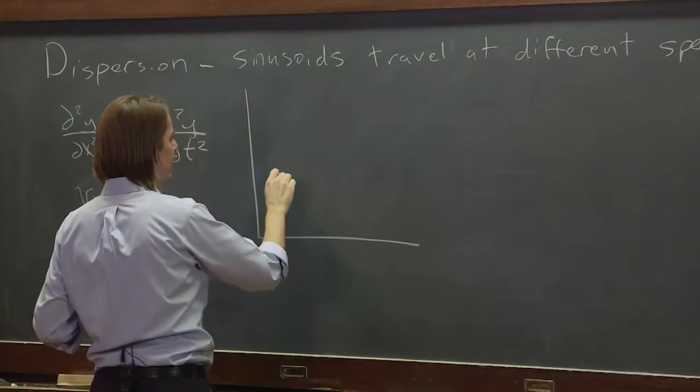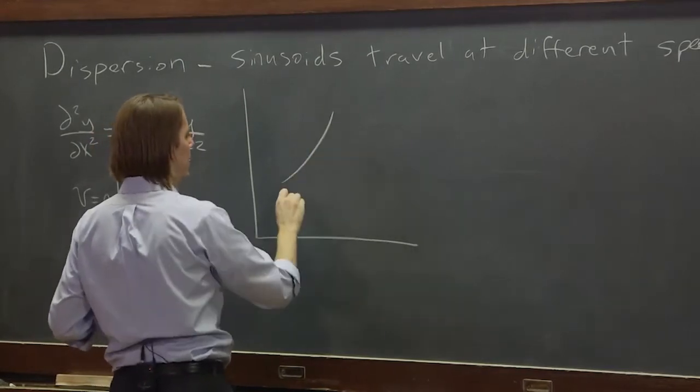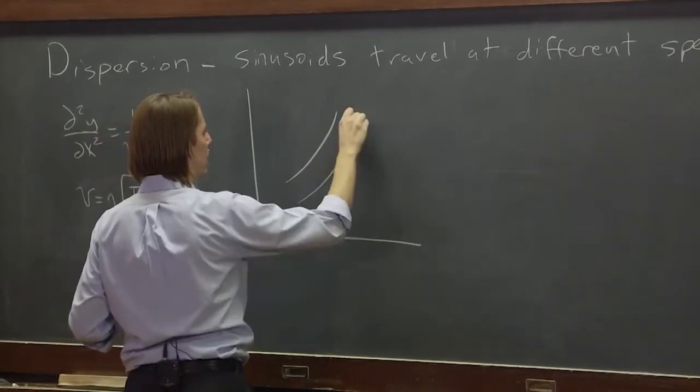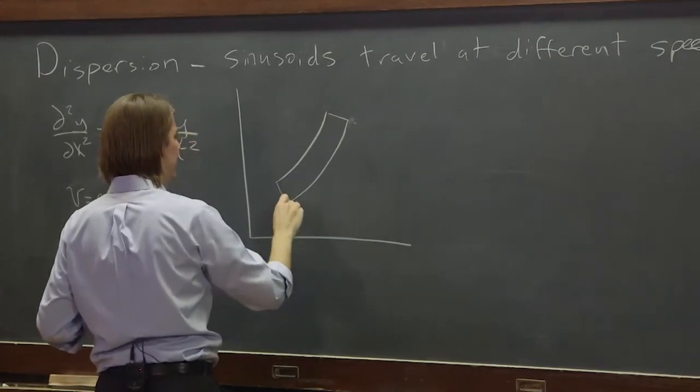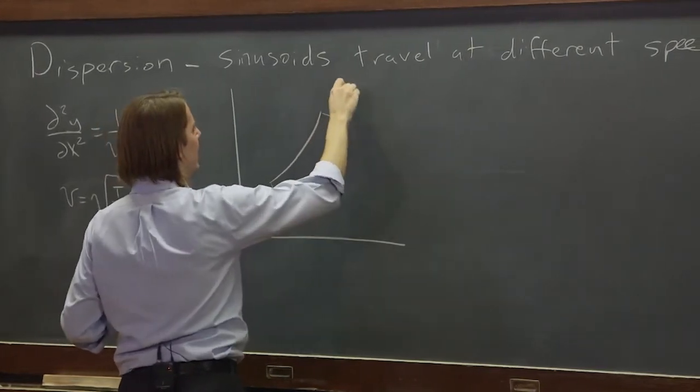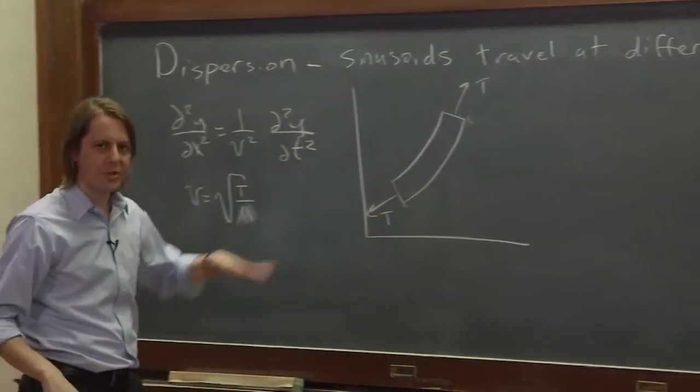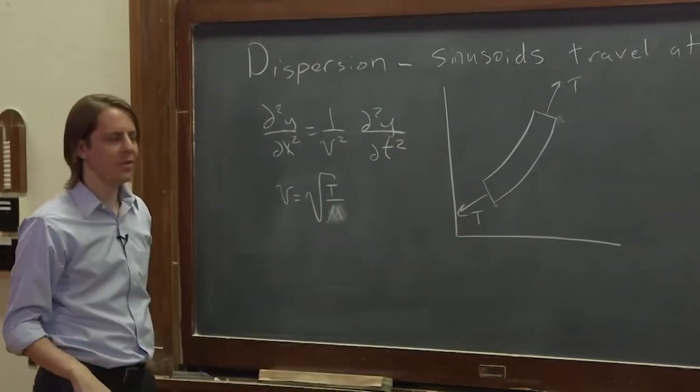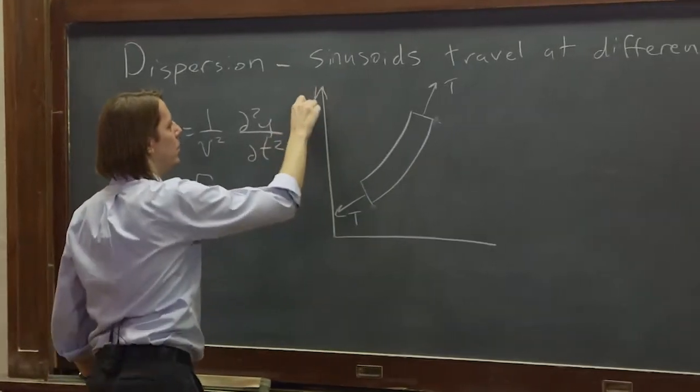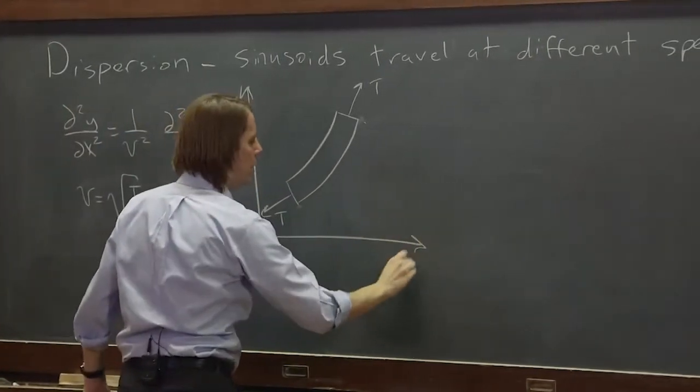So now let's look at it again and add another force. That was one end and that was the other end and this had a tension that way and this had a tension that way and it was really the difference between those tensions that gave us this. But now we're going to do the stiff string.